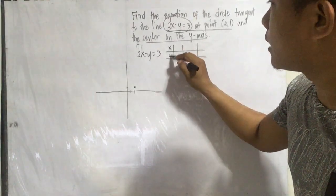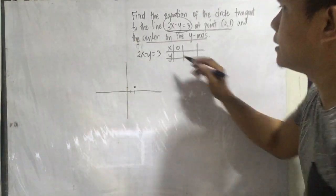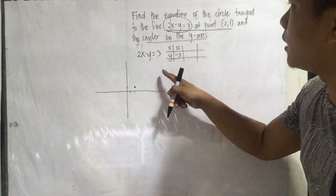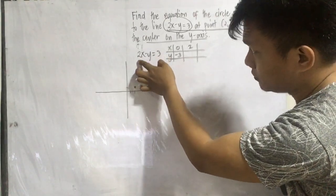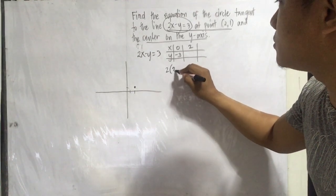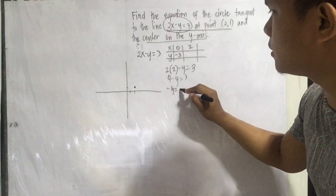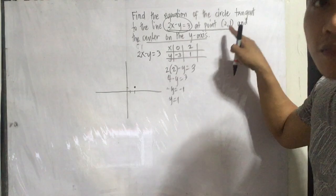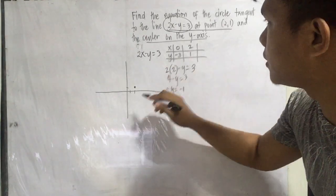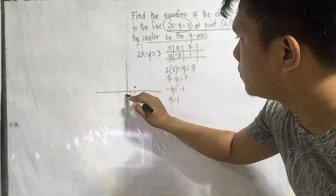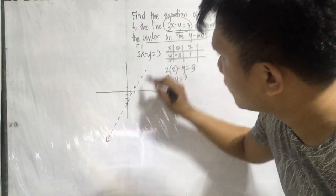So x and y: if x is 0, then y is negative 3. And if x is positive 2, that is 2 times 2 is 4. So 2 times 2 minus y equals 3 gives us 4 minus y equals 3; transposing, negative y equals negative 1, so y equals positive 1. That's why we have the point of tangency at positive 2, positive 1. So let us graph using that table of values: (0, negative 3) and (2, 1). This is now our line 2x minus y equals 3.